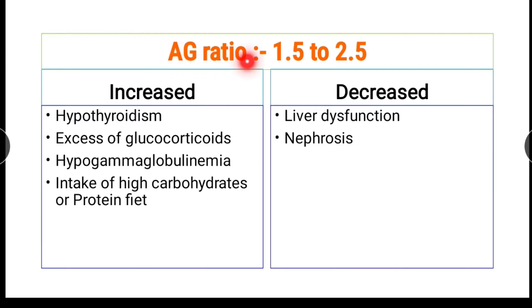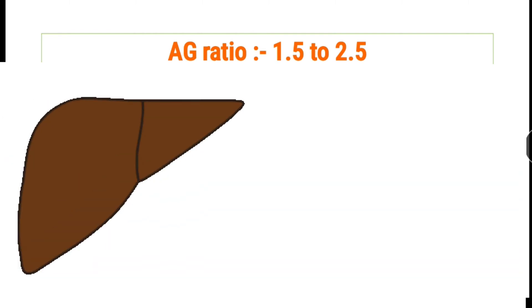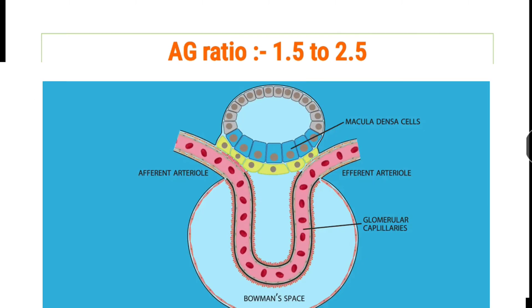The albumin-globulin ratio is normally around 1.5 to 2.5. The causes for alteration in the AG ratio include liver diseases, since the liver is the site of synthesis of plasma proteins. Plasma proteins are usually not excreted in urine, but if there is damage to the glomerular filtration membrane, plasma proteins are lost, which also alters the AG ratio.